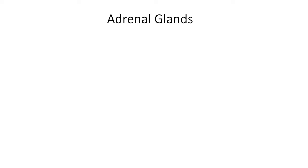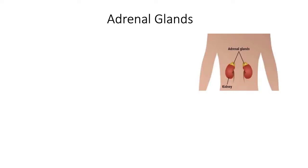Hi everybody, welcome back. Today we're going to be discussing the adrenal glands. These are the endocrine glands that sit on top of the kidneys, like little hats. I separated these out because they have multiple functions and different parts of the adrenal gland produce different hormones in response to different events.